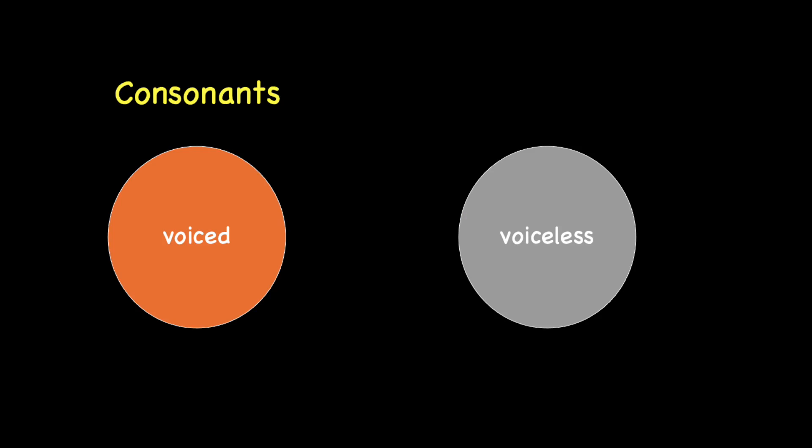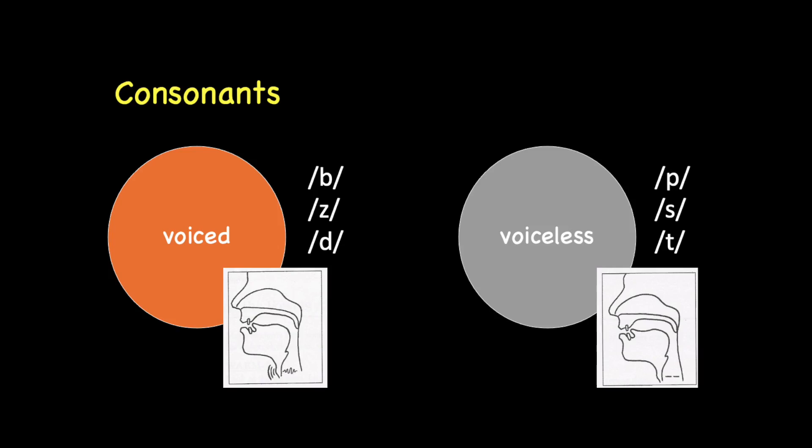And in terms of consonants, we have voiced and voiceless consonants. The difference is the vibration of the vocal cord. We can actually try the sounds together. Put your hand on your vocal cord and make the sound 'b'. Did you feel some kind of vibration in your vocal cord? Yes, so that's a voiced sound. The sound 'b', as in 'bee', is a voiced consonant.